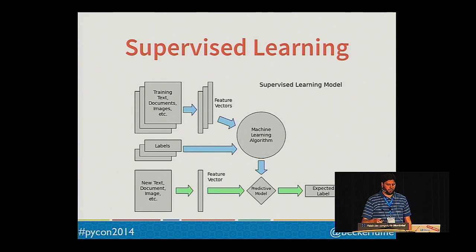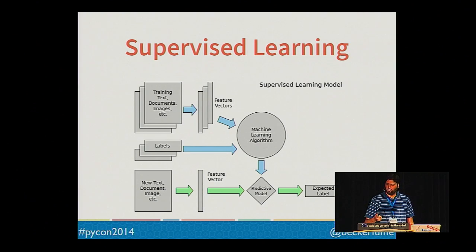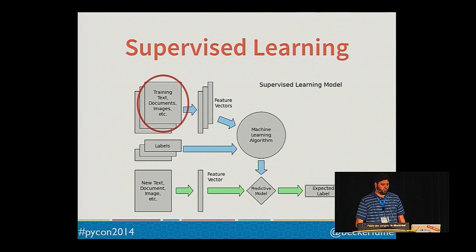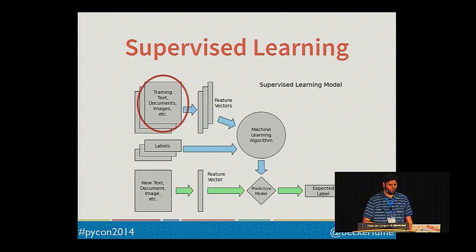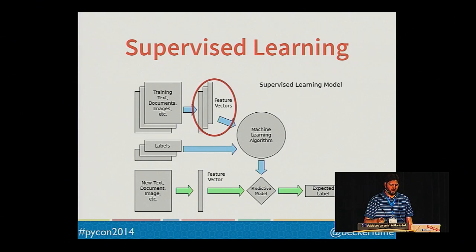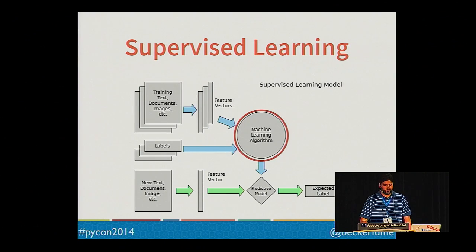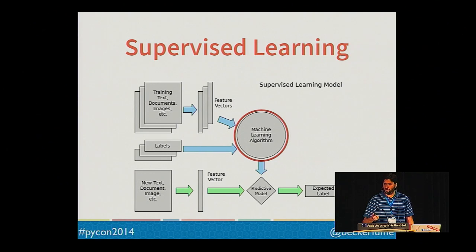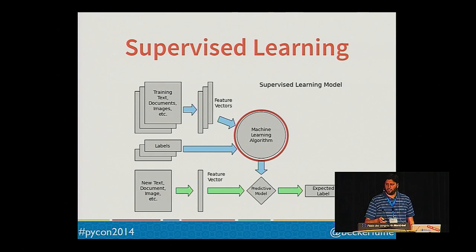The demo in this talk demonstrates a supervised learning algorithm. You start with some input that may or may not be numerical — for example, text documents. You also have labels for each piece of training data. You vectorize your training data, converting it to numerical form. Then you train your machine learning algorithm using your vectorized training data and labels — this is often called fitting your model. At this point, you have a model that can take a new piece of unlabeled data and predict the label.